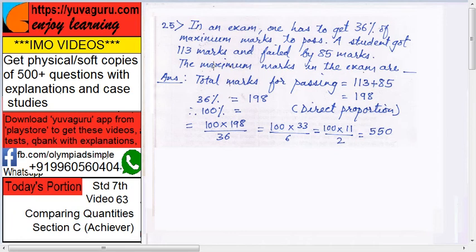So, the maximum marks in the exam are, total marks required for passing equals to 113 plus 85, right? So, that becomes 198. So, 36% equals to 198.